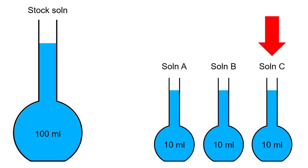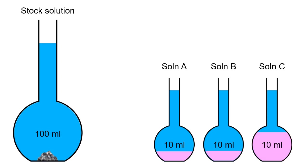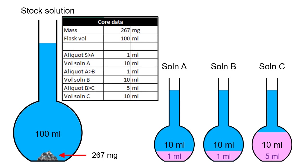So the question is: what's the concentration of salt in solution C in the final flask? We need to fill in some numbers so that we can actually undertake the calculations. For the purposes of this demo, let's imagine we've weighed out 267 milligrams of the salt. Having made up that stock solution, we took a 1 ml aliquot of that to make solution A, then a 1 ml aliquot of solution A to make solution B, and finally a 5 ml aliquot of solution B to make solution C. In Excel: the mass is 267 milligrams dissolved in a 100 ml flask, then a 1 ml aliquot into a 10 ml flask, then 1 ml into another 10 ml flask, and then a 5 ml aliquot into the last 10 ml flask.